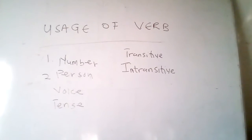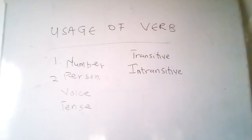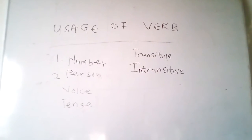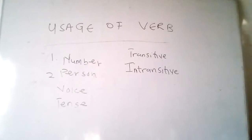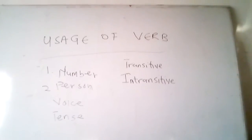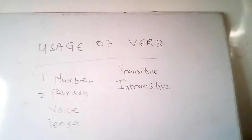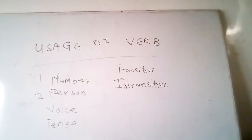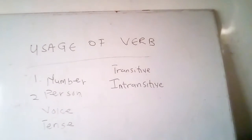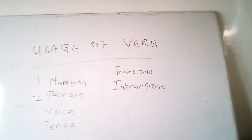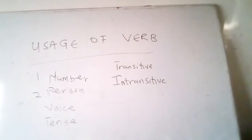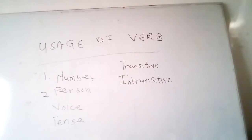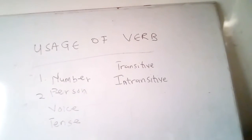Person indicates whether the subject of the verb is first, second, or third person, and whether the subject is singular or plural — as we covered in a previous video about pronouns. First person: 'I play' (singular), 'we play' (plural). Second person: 'you play' — which can be both singular and plural.